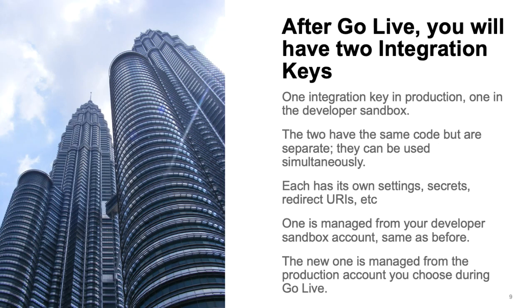After GoLive, you will have two integration keys — one in production, one in the developer sandbox. The two integration keys have the same code but are separate. They can be used simultaneously, each in its own environment. Each has its own configuration settings, secrets, redirect URIs, and so forth. One is managed from your developer sandbox account, the same as before. The new one is managed from the production account you select during the GoLive process.